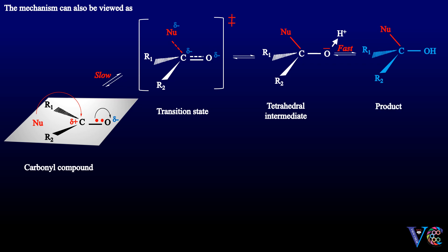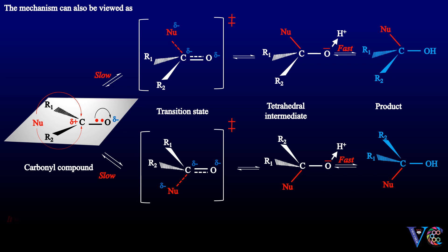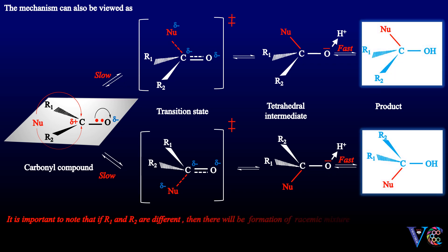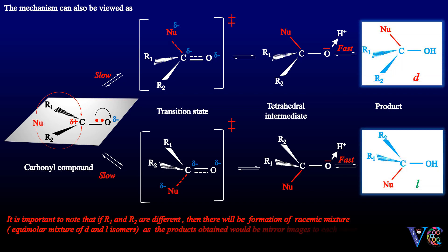If the nucleophile attacks from the bottom, it is important to note that if R1 and R2 are different, there will be formation of a racemic mixture — that is, an equimolar mixture of D and L isomers — as the products obtained would be mirror images of each other, that is, enantiomers.